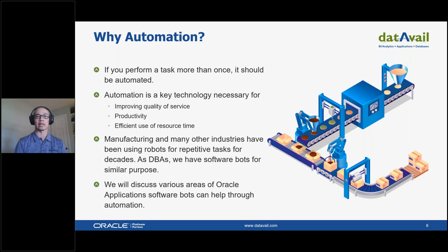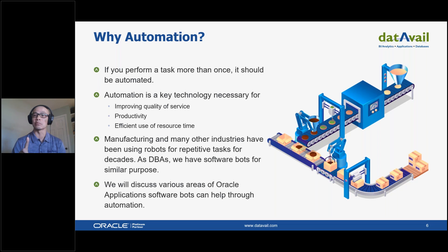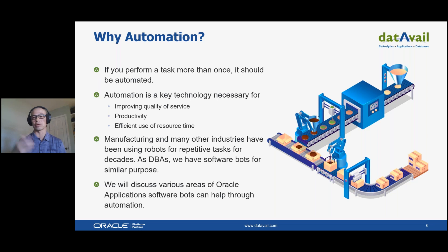Why automation? Repetitive, mundane tasks can be automated. Automation improves quality of service, ensures consistent outcomes, and avoids human errors. It helps with productivity — it allows you to do more and frees you up for more important tasks. Automation is not a new concept. Manufacturing has been using robots to produce goods. We have software robots — bots — which are programs that perform intended functions without intervention. These bots can be scheduled via crontab, DBA jobs, DBMS scheduler, or as Oracle application requests, request sets, or manually initiated.